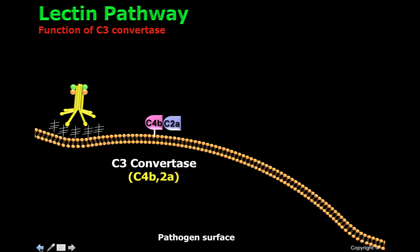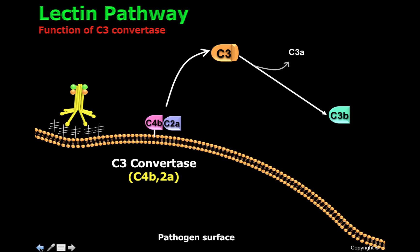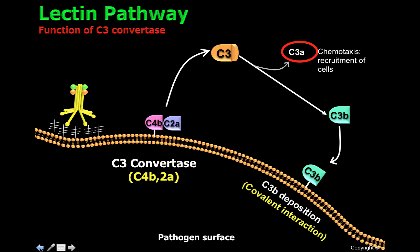The C3-convertase, C4B-C2A, will now be able to clip C3, generating C3A and C3B. C3A is a very potent chemoattractant molecule that allows recruitment of neutrophils to the site of infection. C3B, if it is close enough, will covalently attach to the cell surface — this is what we call C3B deposition.